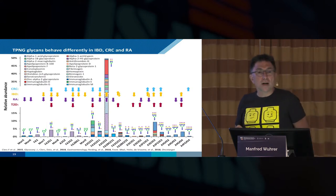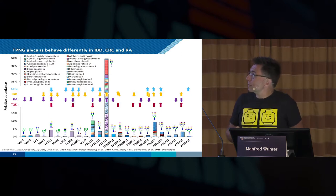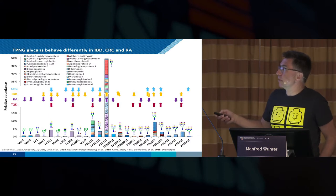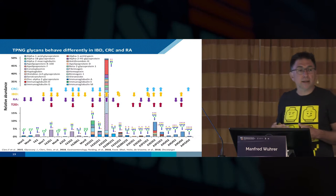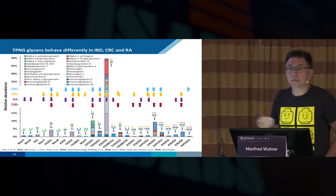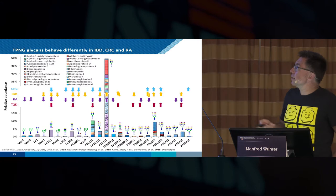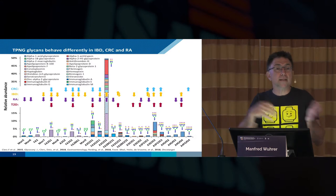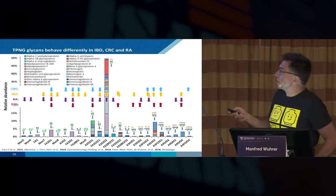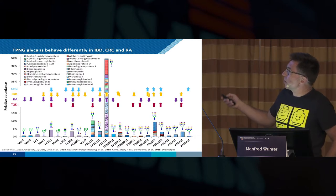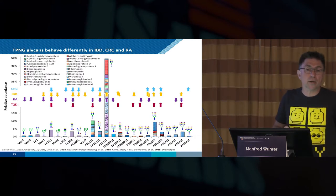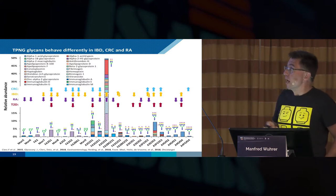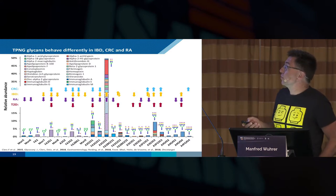A rough summary of how this applies across different diseases: colorectal cancer, inflammatory bowel disease, rheumatoid arthritis, and type 2 diabetes — we have done and published studies on these together with Gordon and other collaborators. It's interesting to look at the differences and commonalities between all these diseases, schematically indicated by arrows. Some glycans go up, others go down, and you already see quite some differences between these disease phenotypes.